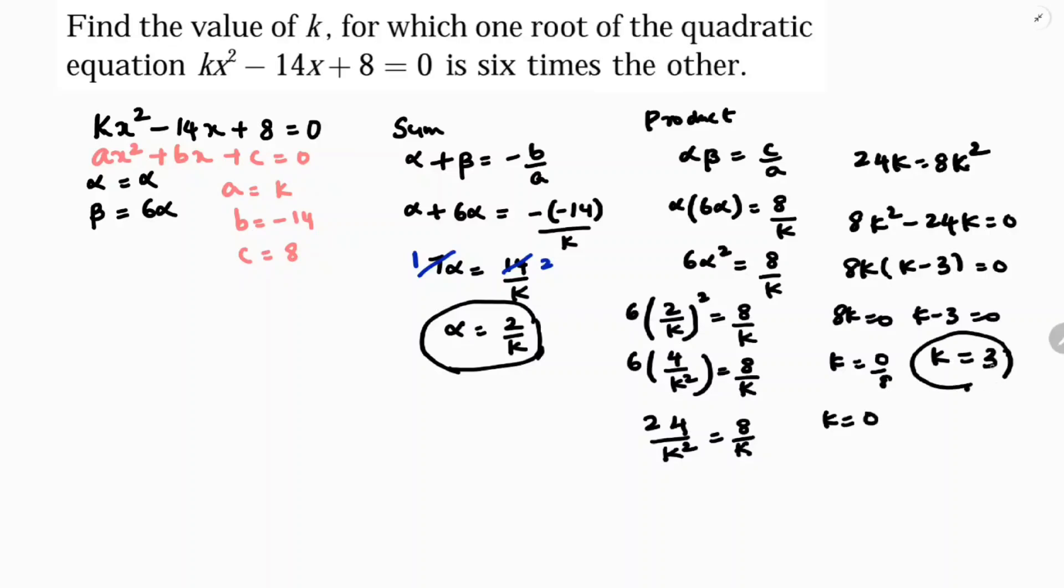k = 3 is the answer because if k = 0, we will not get a quadratic equation itself. So k = 0 is not possible.